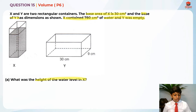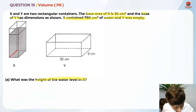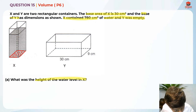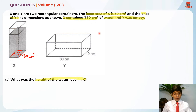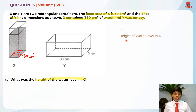We know that the base area of X is 30 cm squared. In P6 volume, we need to use the formula: height equals volume divided by base area. So I'm going to take the height of water level in X as volume divided by base area.